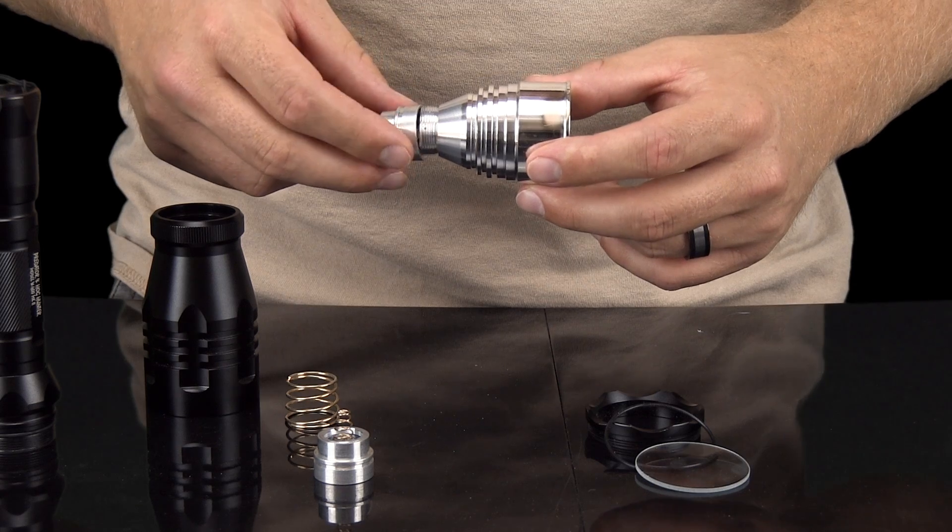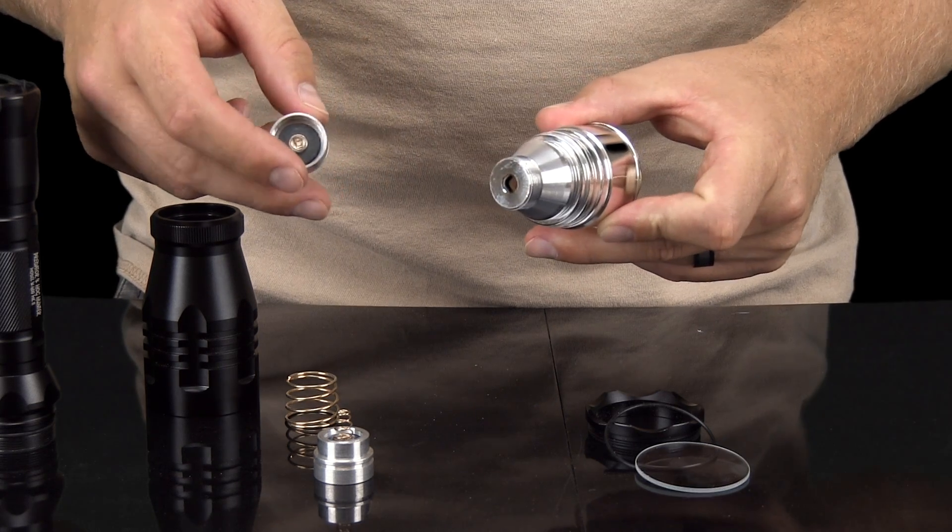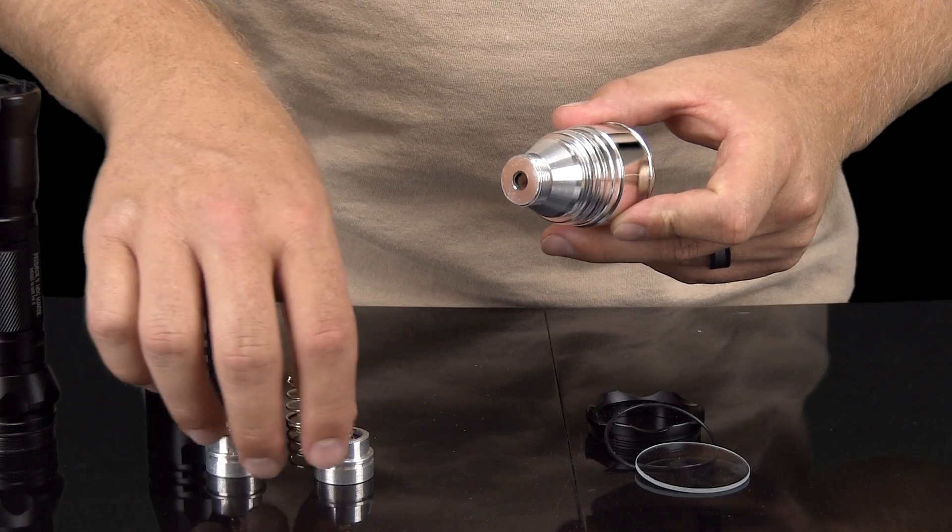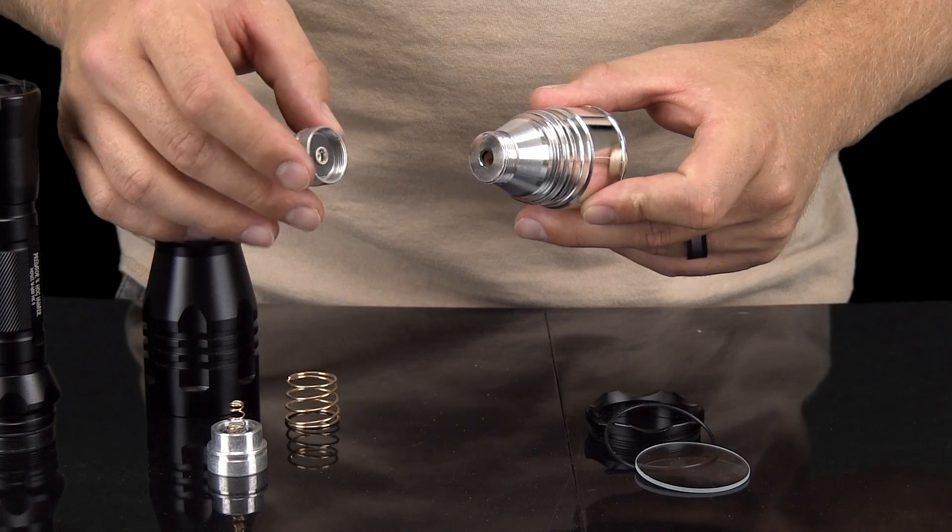You can now install the new LED by screwing it onto the reflective housing. Be sure to screw it in all the way, but do not over-tighten it.